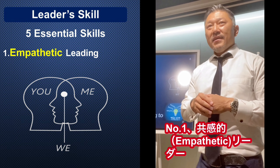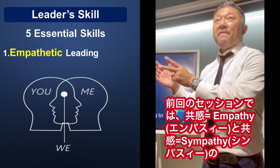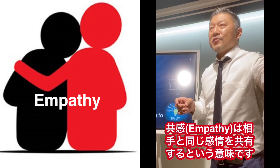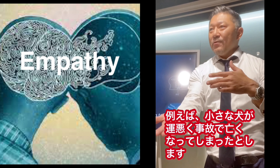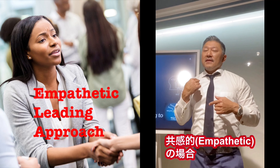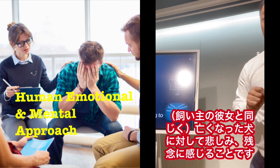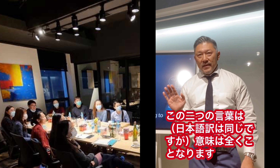Number one essential skill: empathetic leadership. In the previous session I explained the difference between sympathy and empathy. Empathy means feeling the same as you. For example, a small dog had an accident and passed away. She's crying a lot. Empathetic case: I feel sorry for the dog - that is empathy. Sympathy is: she's crying so much, I'm really sorry for her. The meaning is totally different - a very important differentiation.